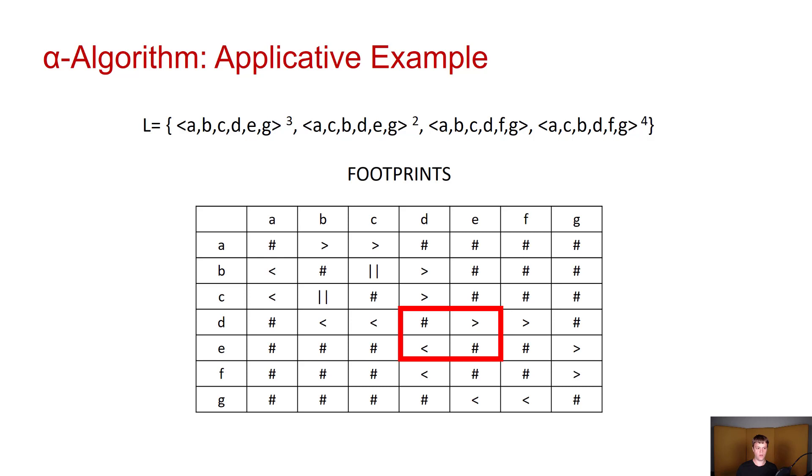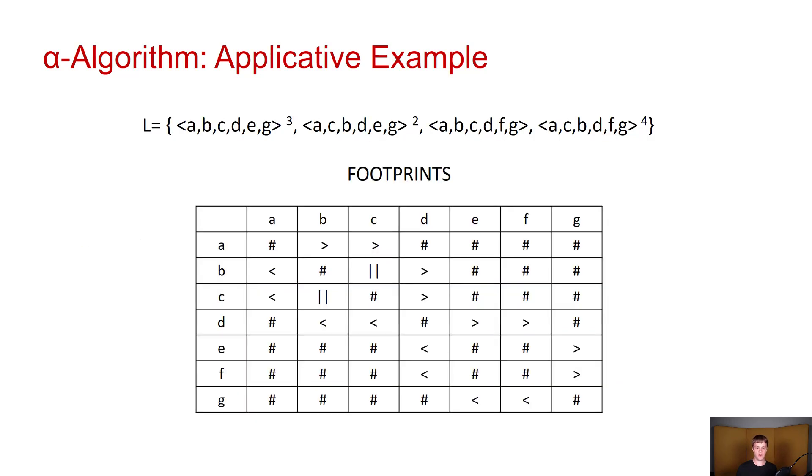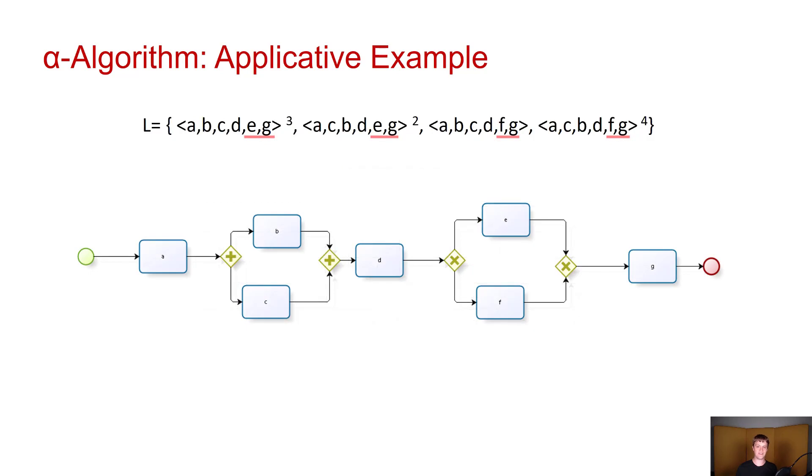Continuing on, we will see that D is followed by E, D is also followed by F, but this time there is no relation between E and F, thus indicating that now we need an XOR split gateway. And finally we can see that E is followed by G, F is followed by G, and as we saw before E and F have no relation between them, thus we can use an XOR join gateway to finish the process map.